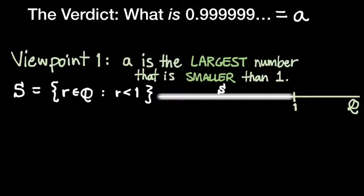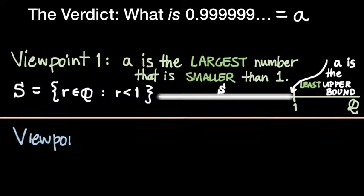And so whatever this 0.9 repeating is, we know that 0.9 repeating, it may or may not be an element of this set, but we know it's going to be the largest such number that belongs to this set. So we would say, in the parlance of our course, we're going to say that A is an upper bound for this set. It means it's larger than everything in the set S, but that it's the smallest such number which is larger than everything in that set.